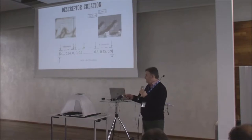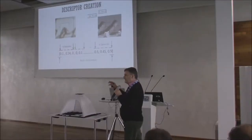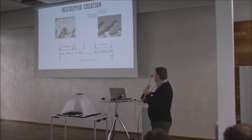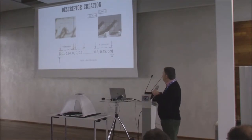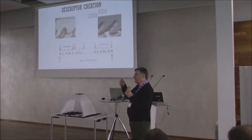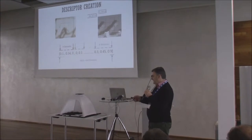For each key point, we use different windows depending on the scale, with automatic scale selection based on an optimized function. We build a descriptor vector representing the region around the key point, which is divided into 16 cells. For each cell, we compute a particular vector representing the information inside that cell.